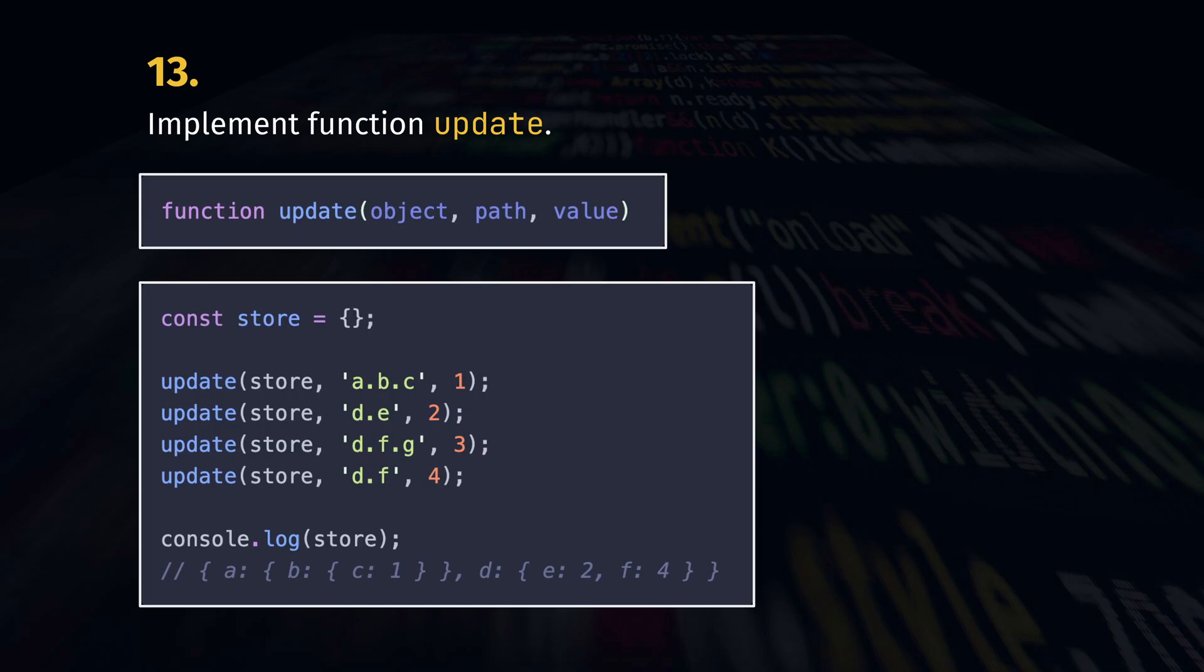So if you update the store at path A.B.C with 1 then the value of C in an object B in an object A in the object store will equal 1. If the properties along that path do not exist, that function creates objects automatically so that the value is always set.